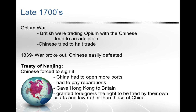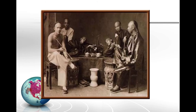Under the Treaty of Nanjing, China had to open more ports and could no longer remain isolationist. They had to pay war reparations — money the British spent on the war. They also gave Hong Kong to Great Britain. Additionally, foreigners were granted the right to be tried by their own courts rather than Chinese courts, meaning British law effectively meant nothing — British subjects could do as they pleased in China. This opened China up to domination by other countries.